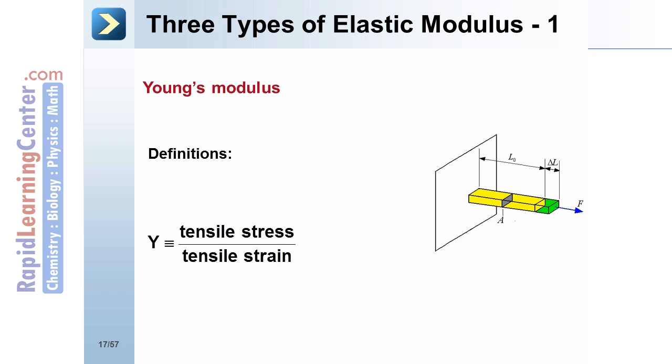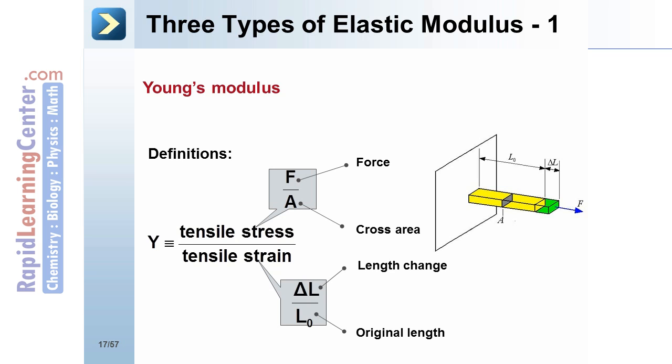First, Young's modulus. This is defined as the tensile stress divided by the tensile strain. This means, for the tensile stress, the force per cross-sectional area. For the strain, that is the length change per original length. You can examine these quantities in the diagram to the right.